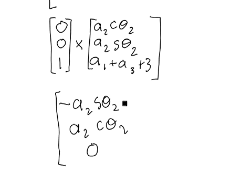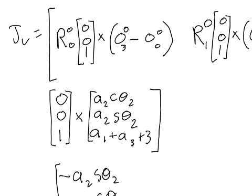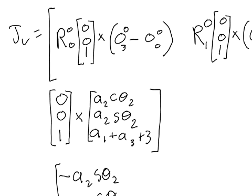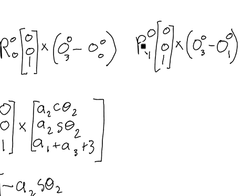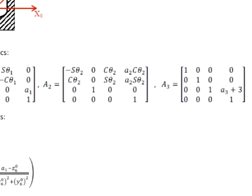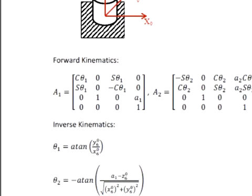Now let's move on and expand the second column. The first thing we want to do is look at what the rotation matrix is from frame 0 to frame 1. We get it from A1, our first homogeneous transformation matrix. We're going to multiply this matrix times the k vector (0, 0, 1), so we just pull out the last column of the rotation matrix.